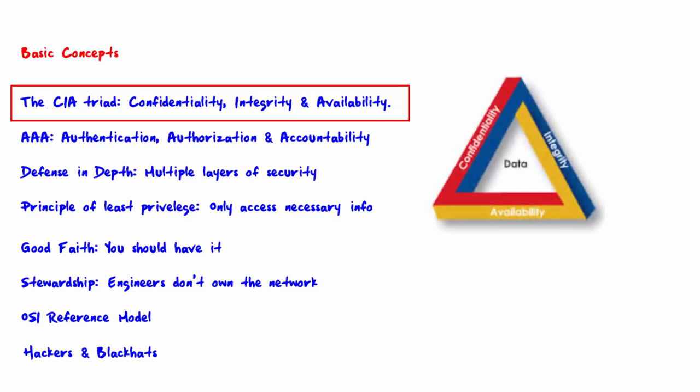The CIA triad is one of the most basic principles of information security. CIA stands for confidentiality, integrity, and availability.